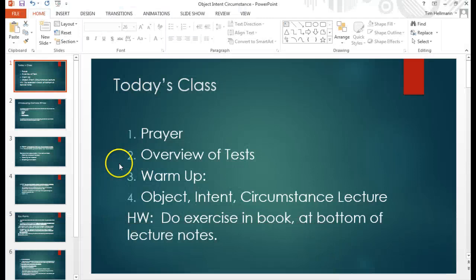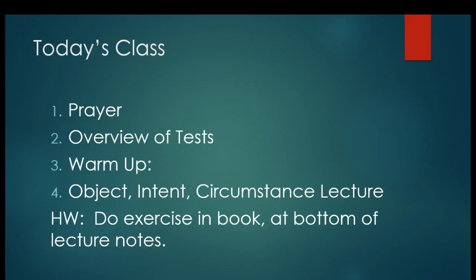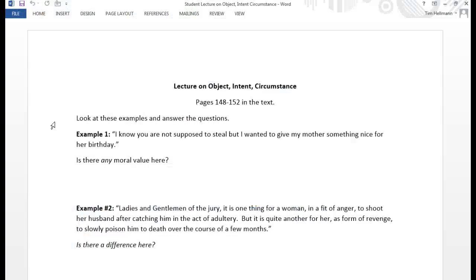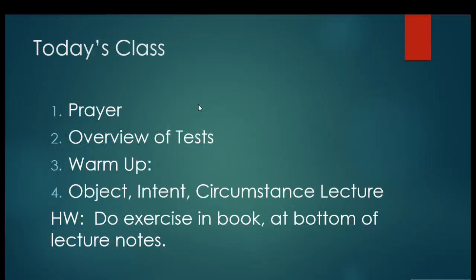You should have this sheet of paper in front of you. The key objective that we're doing today is to try to understand the Catholic teaching on object, intent, and circumstance. It's not nearly as hard as one would think. If you don't understand anything that's going on, this is all in the textbook right here at the top of your page, pages 148 to 152.